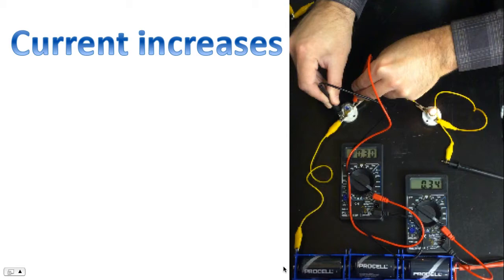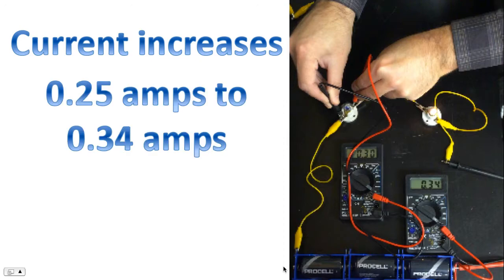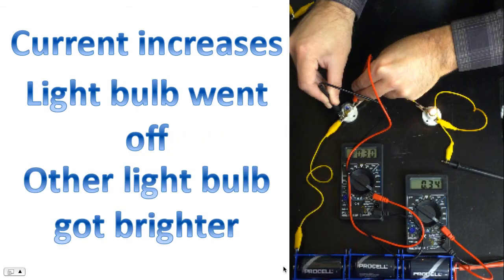For starters, the current has increased. It went from about 0.25 amps to 0.34 amps. In addition, the light bulb went off. And the other light bulb, as you can see in the diagram, got brighter.